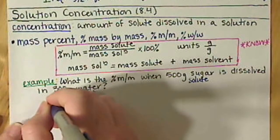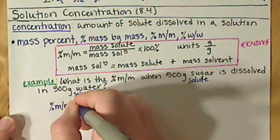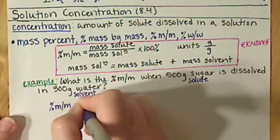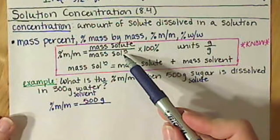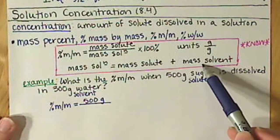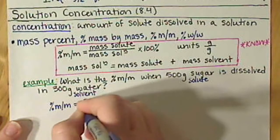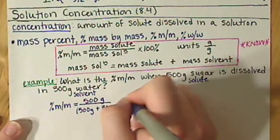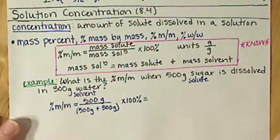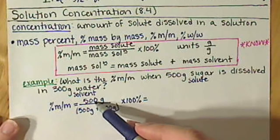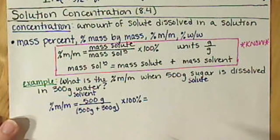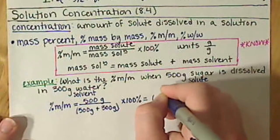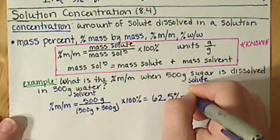Following our equation, percent mass by mass equals the mass of our solute — 500 grams — divided by the mass of our solution, which is the mass of the solute plus the mass of the solvent: 500 grams plus 300 grams, times 100%. So we get 500 divided by 800, which is 0.625, giving us 62.5% mass by mass.